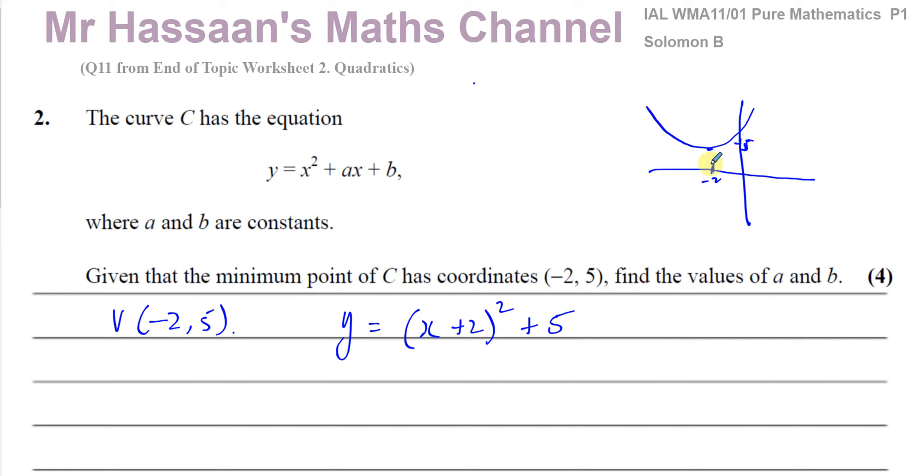And the reason why this completing the square looks like this is because that 5 is the lowest it can ever reach. What makes it reach that 5 is that this squared bracket will always be positive. Whatever comes in here is going to become positive.